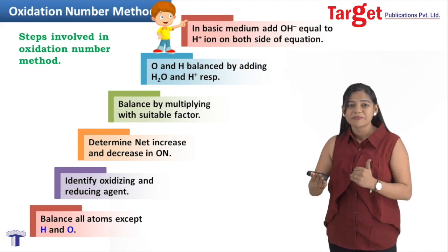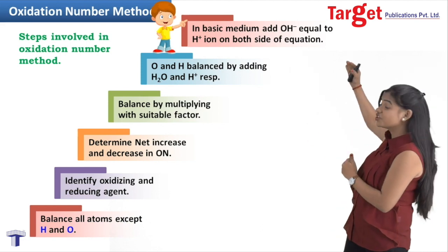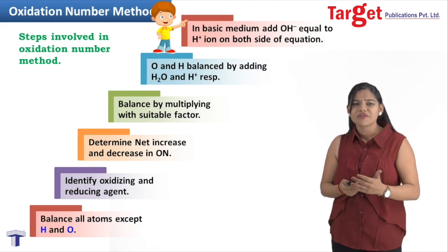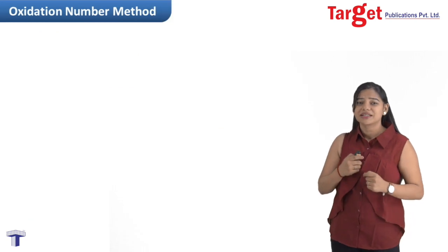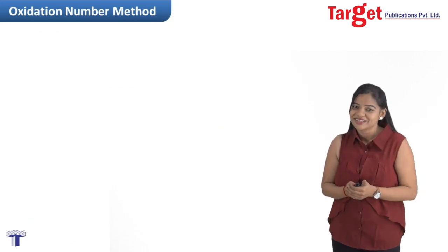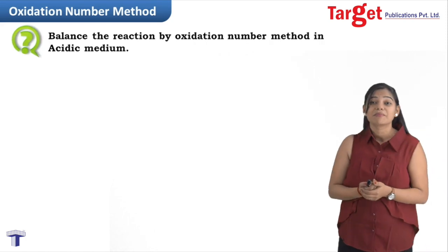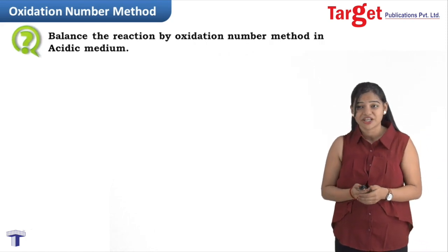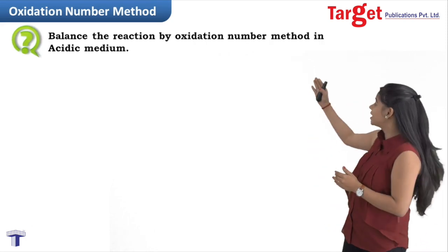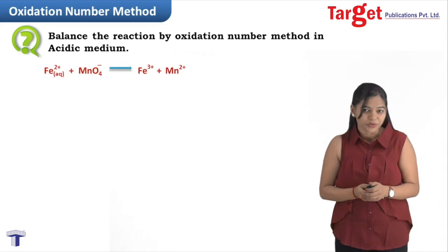These are all the steps by which a redox reaction can be balanced. Now let's work through an example to better understand the process. The first question is: balance the following reaction by the oxidation number method in acidic medium.